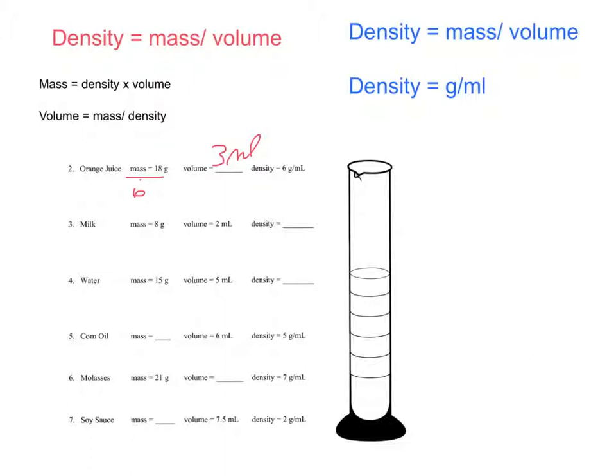Let's look at number 3. We have our mass and volume given. We need to solve for density. Density equals mass divided by volume. So 8 divided by 2, we would have a density of 4 grams per milliliter.